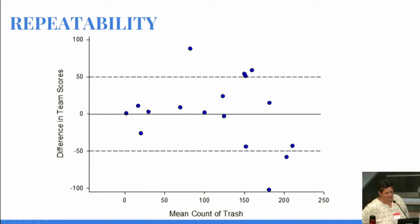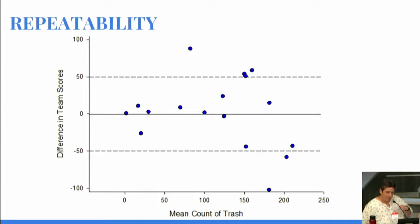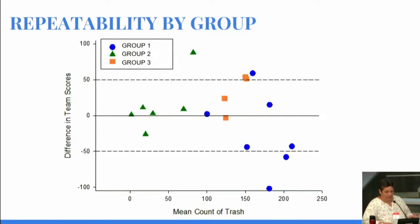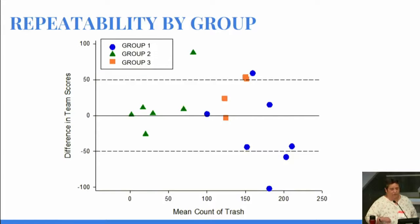To give you some of our results: this graph shows each dot representing two teams doing the same site, and it shows the difference between those two teams' measurements in the amount of trash measured. The closer to the zero line, the closer those two teams were at measuring the same amounts of trash. As we go out further, the spread becomes a little bit wider. We also assessed repeatability and reproducibility by having different groups perform each assessment — each different color and shape represents a team from a citizen science group, the Stormwater Monitoring Coalition, or a training group versus a well-trained group out in the field at the same time doing the same assessment.